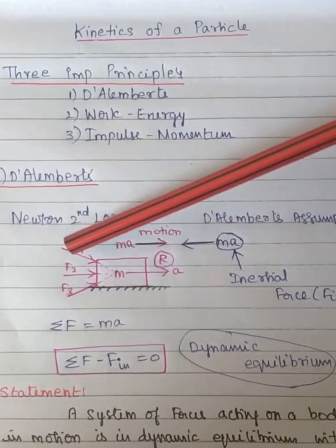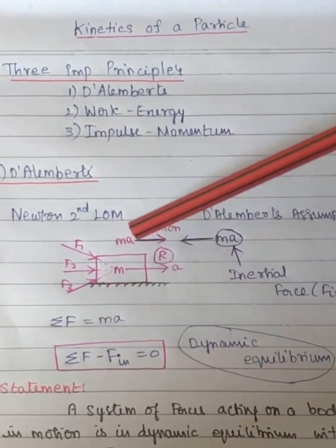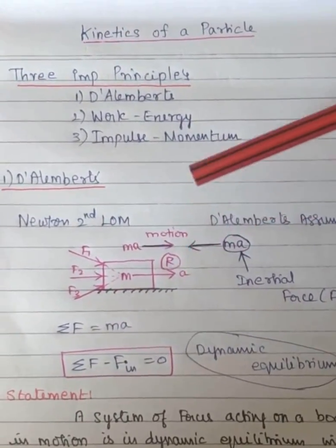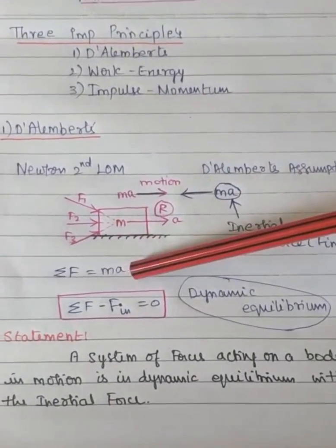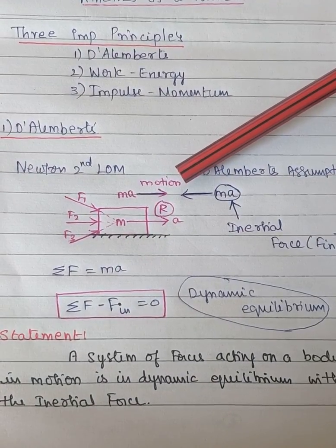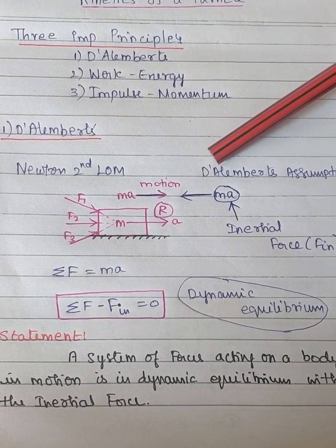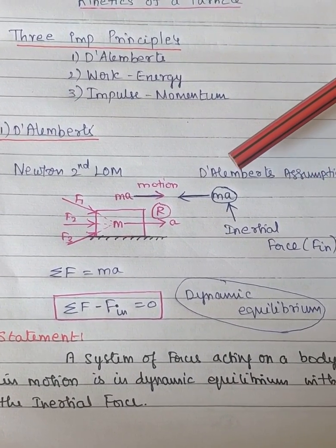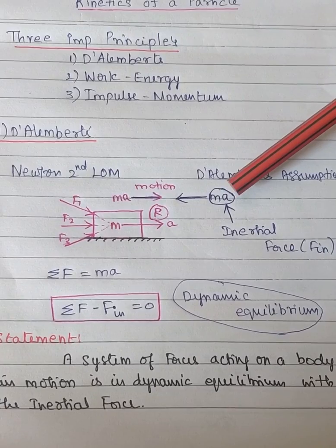To bring the body which is in motion to equilibrium, according to D'Alembert's assumption, an imaginary force of magnitude mass times acceleration is acted in the opposite direction to the motion, and D'Alembert calls this force the inertial force.